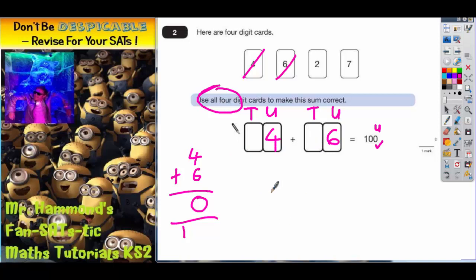24 add 76. 4 add 6 is 10. Put your 0 in, carry your 1. 2 plus 7 plus 1 is 10.